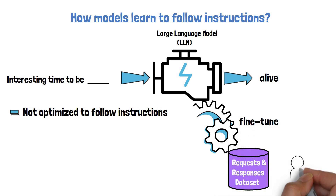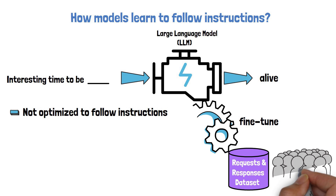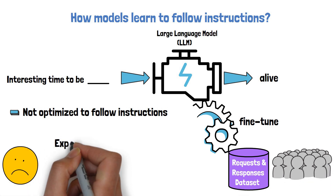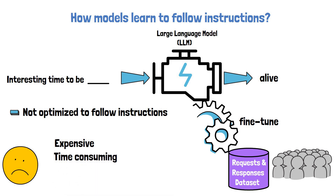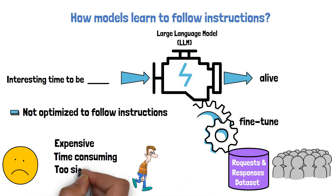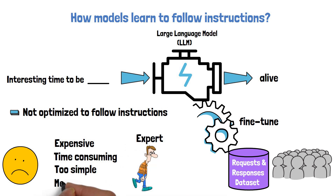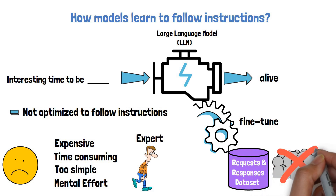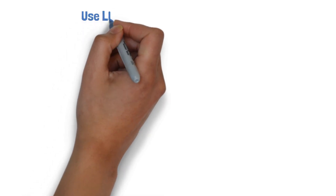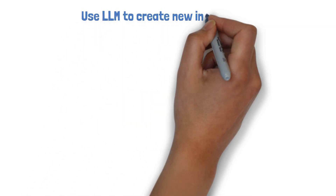This dataset is mostly human-crafted, meaning both the request and the response are generated by humans. As a result, such datasets are expensive and time-consuming to create, and they also tend to be skewed toward simple instructions, since complex instructions require expertise and more effort from the people creating them. The innovative technique introduced to create WizardLM is to use an LLM to create a large open-domain instructions dataset.